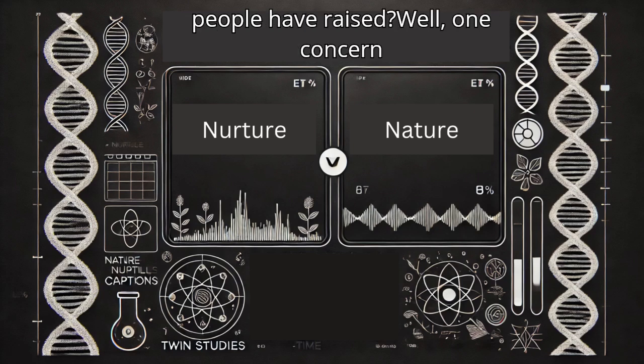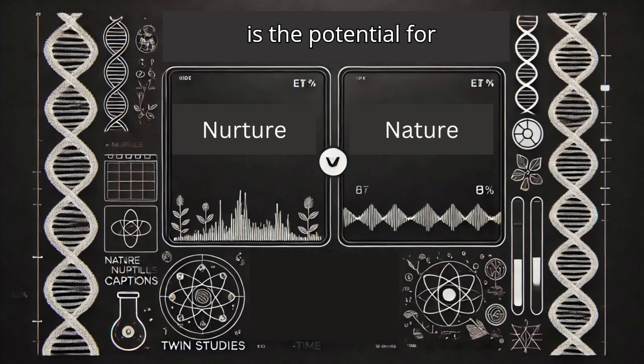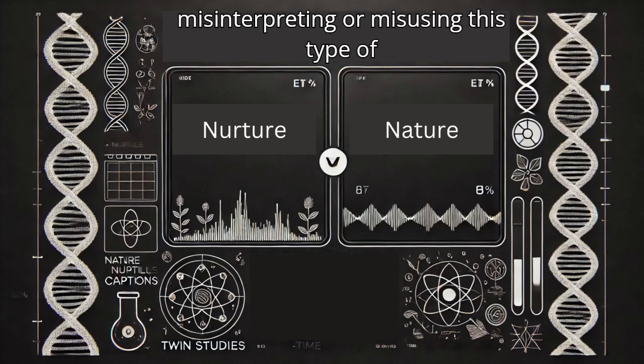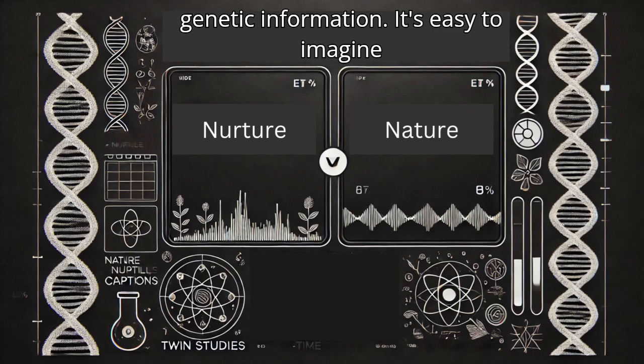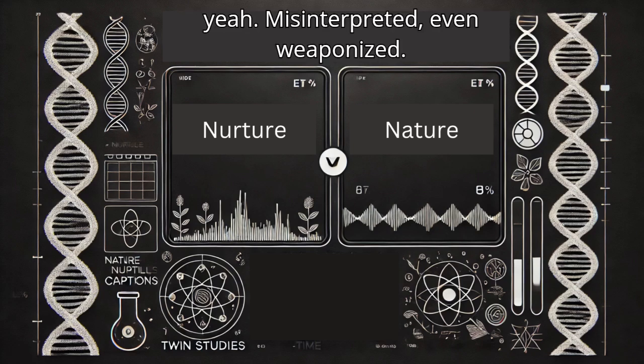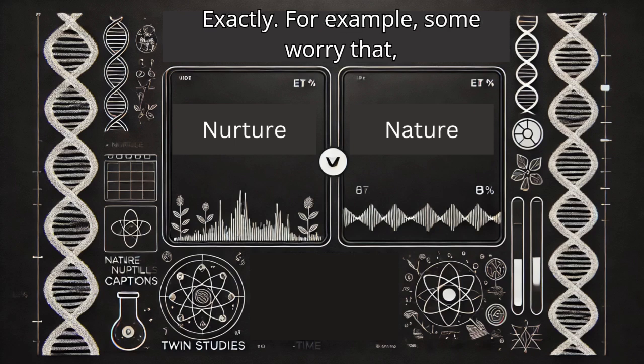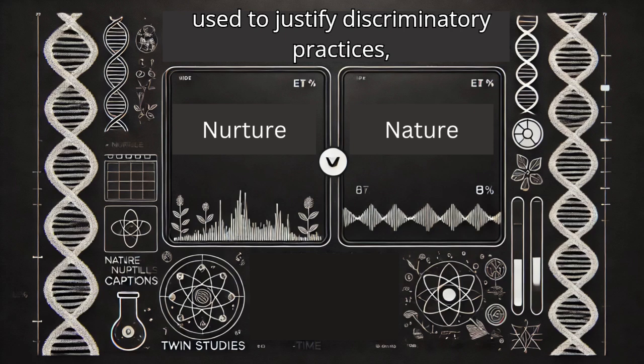Well, one concern is the potential for misinterpreting or misusing this type of genetic information. It's easy to imagine how this kind of information could be misinterpreted, even weaponized. Exactly. For example, some worry that this type of research could be used to justify discriminatory practices, fueling prejudices based on genetics.